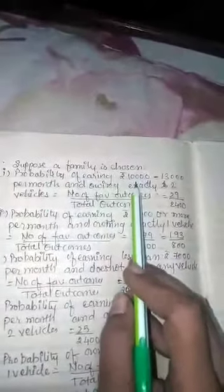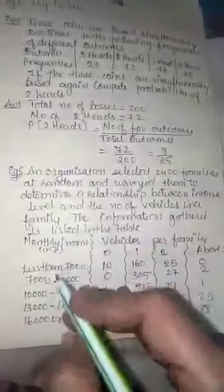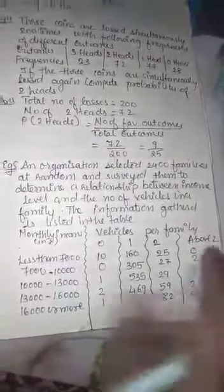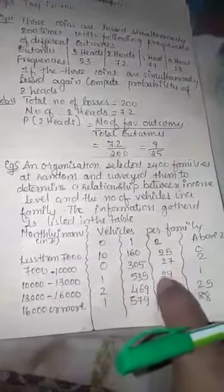Suppose a family is chosen. First, find the probability of earning 10,000 to 13,000 per month and owning exactly two vehicles. From the table, families with 10,000 to 13,000 income and two vehicles is 29. So favorable outcomes = 29, total outcomes = 2400. P = 29/2400.